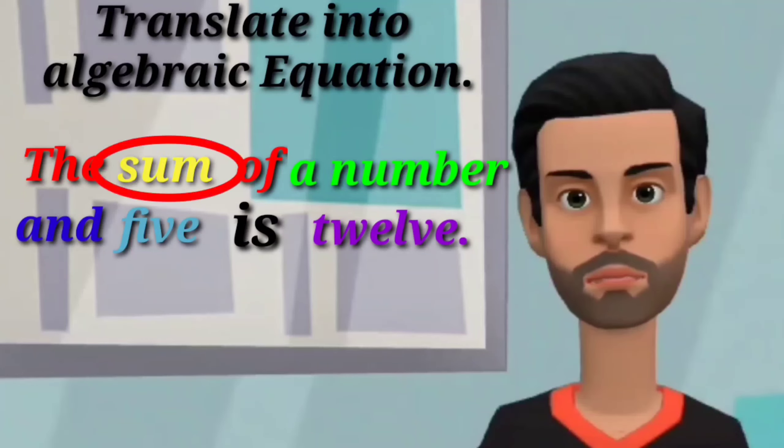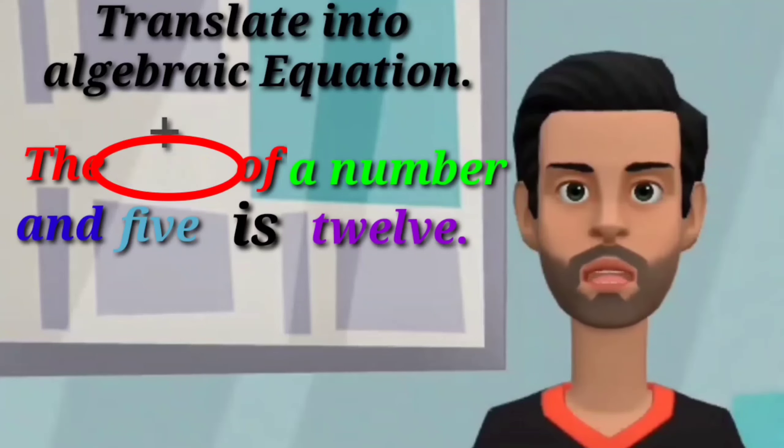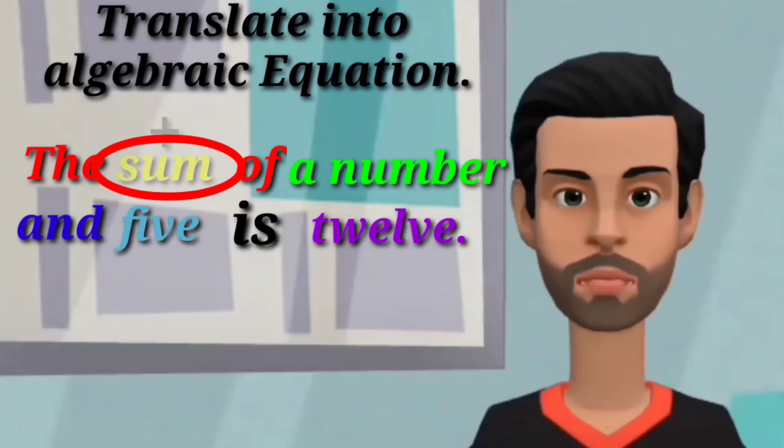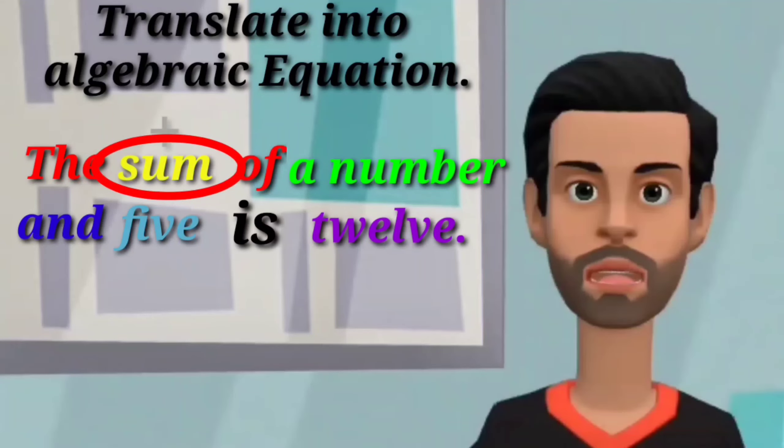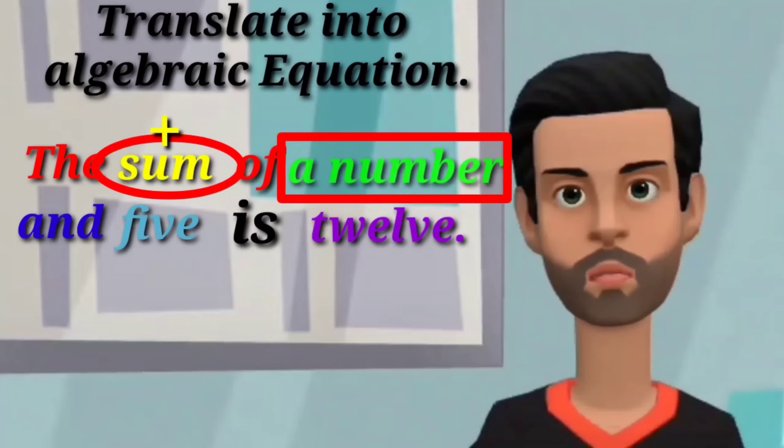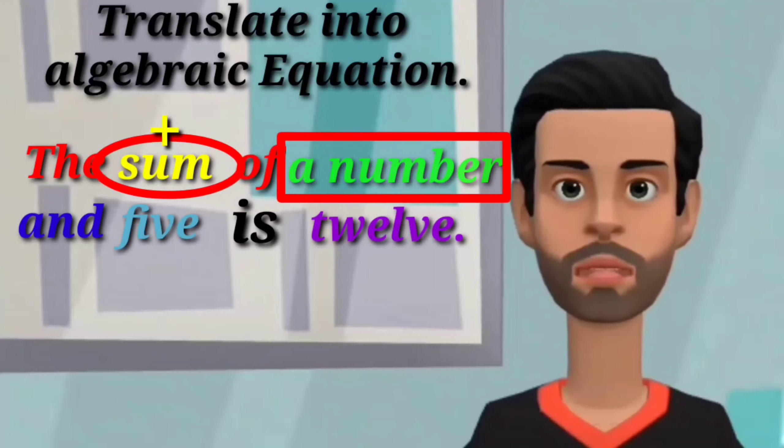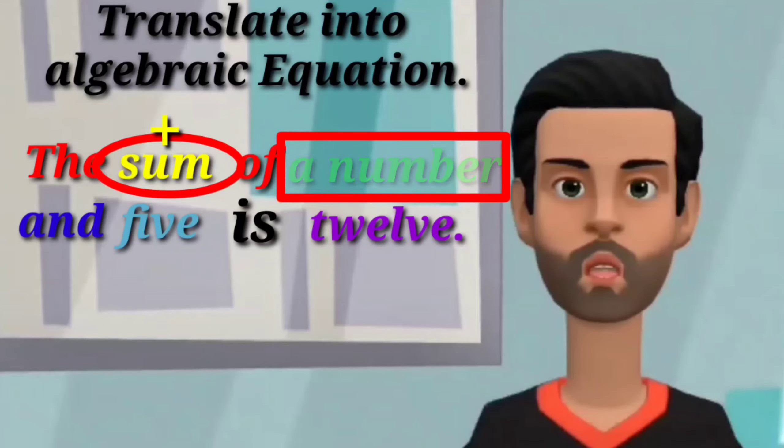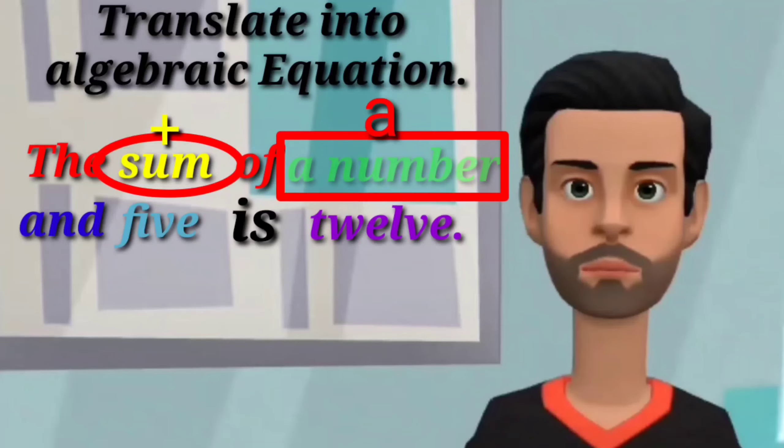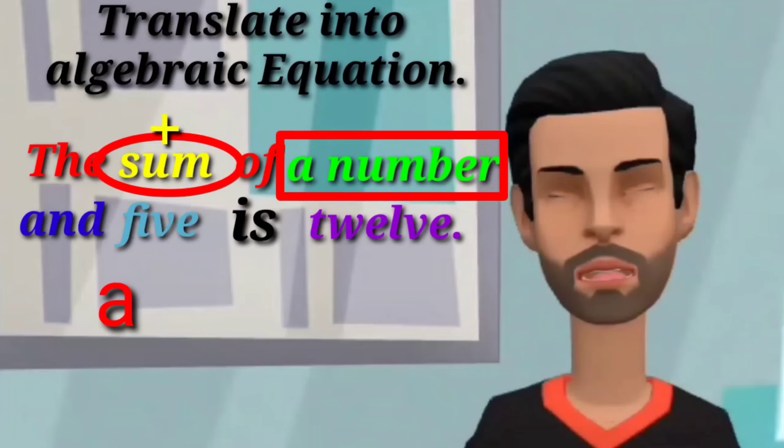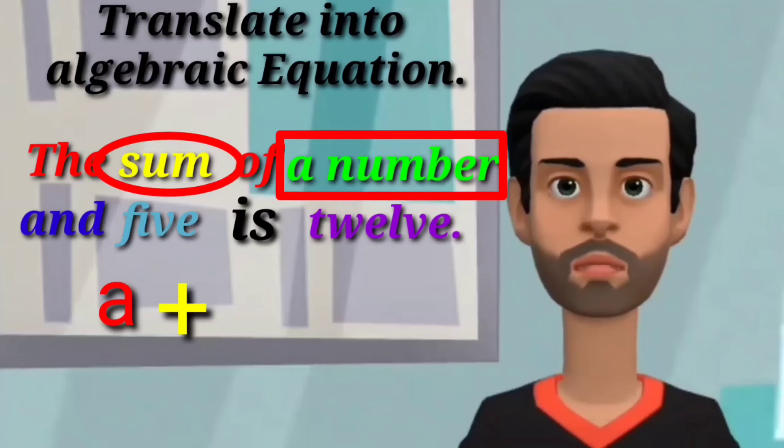You can also change the word sum into addition symbol. The word sum tells us to add the variable and five. Sum is the total. Because I don't know the value of a variable, I'll change it into letter. In this situation I will use A as a variable of a number. I write first the variable because it is mentioned first in this phrase. Next to it is five.